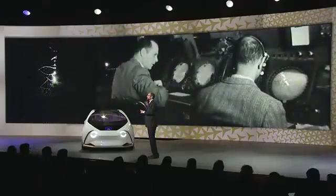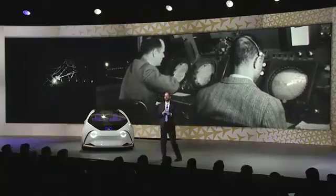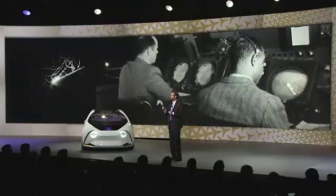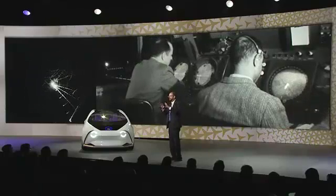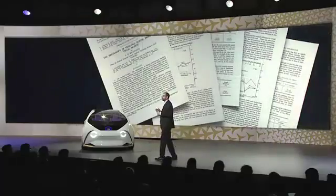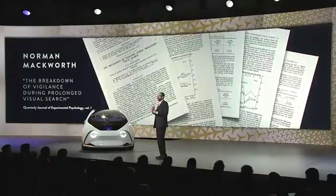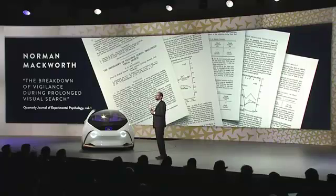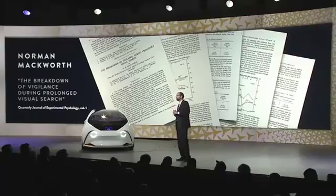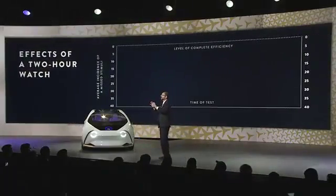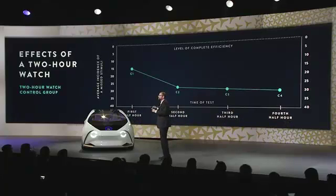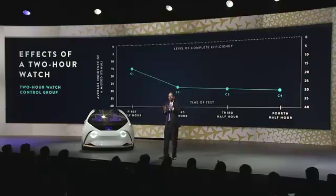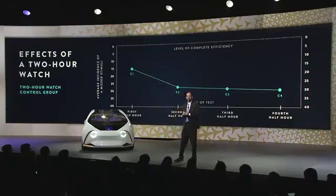Research psychologists call this the vigilance decrement. The research started during World War II, when it became clear that radar operators looking for enemy movement became less effective as their shift wore on, even if they kept their eyes on the task. In 1948, a research psychologist named Norman Mackworth wrote a seminal paper called 'The Breakdown of Vigilance During Prolonged Visual Search.' His experiment used a clock with only a second hand that would occasionally and randomly jump by two seconds instead of one. Even if you keep your eyes on the Mackworth clock, over two hours your performance at detecting those two-second jumps decreases in proportion to how long you do it.